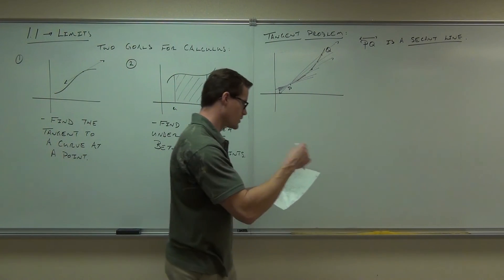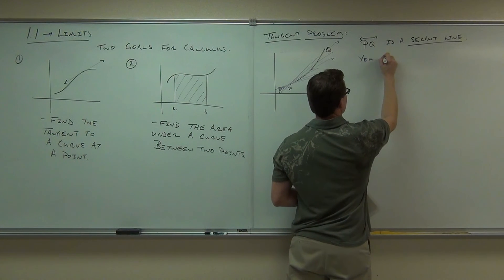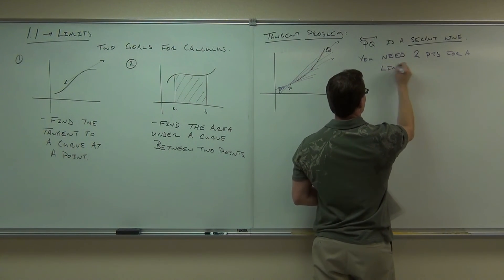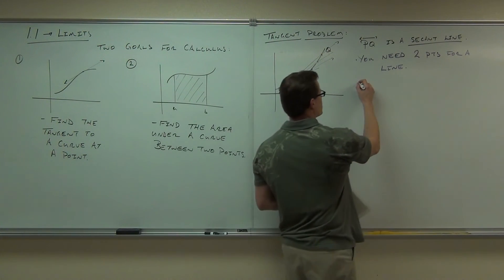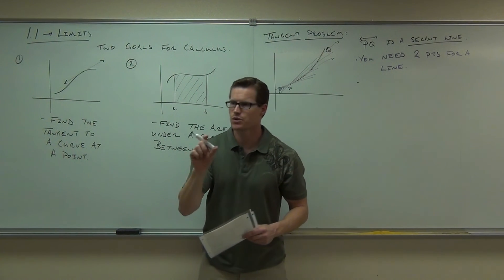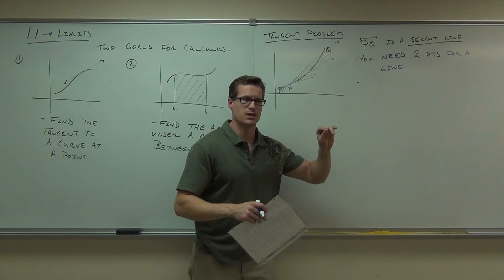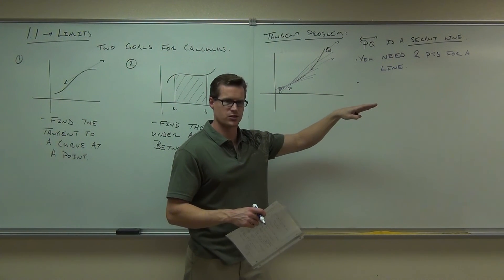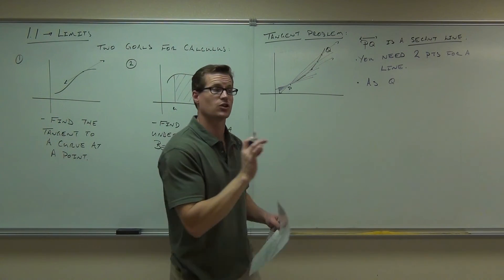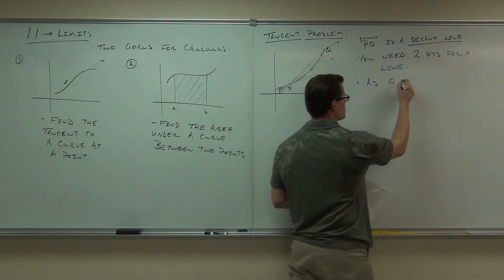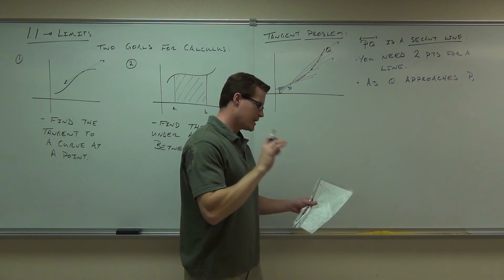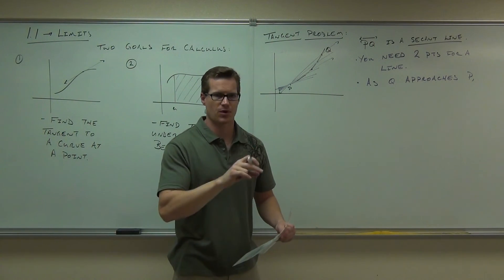So what we're doing right here: we need two points for a line — we understand that. We have points P and Q. The question we're asking is: what happens as Q gets closer to P? As Q gets closer to P, the secant line more closely approximates the tangent line. As Q approaches P — and we're going to use that word "approaches" for limits as well — we get closer to a tangent, or in other words, the secant more closely approximates the tangent.